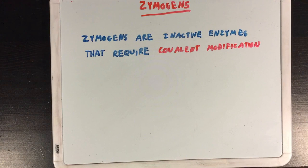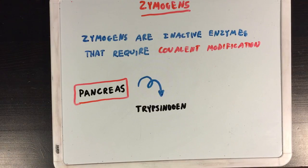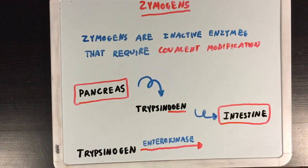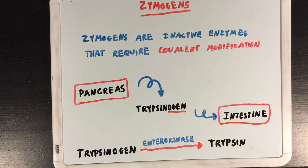A big example of zymogens in biology are the digestive enzymes that the pancreas releases so that you can digest food. One of the enzymes the pancreas releases is called trypsinogen, which is a zymogen, as indicated by the 'ogen' suffix. This is an inactive form of a protease enzyme that is shipped to the intestine. Once in the intestine, it's covalently modified by an enzyme called enterokinase, which converts it to its active form, trypsin. This is to prevent trypsin from breaking down proteins we need in the pancreas, only allowing it to break proteins down in the intestine after it's encountered enterokinase. You can distinguish zymogens from their active form by name, in that zymogens have 'ogen' added to the end.